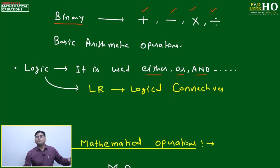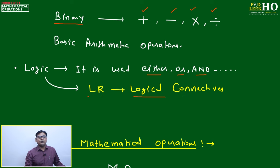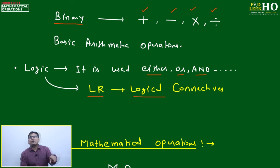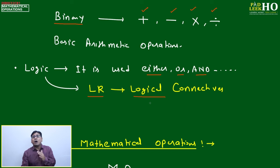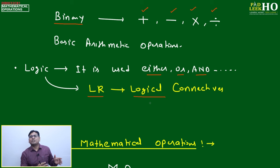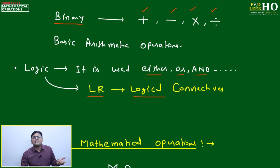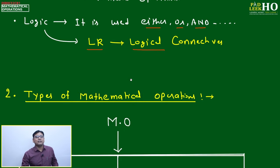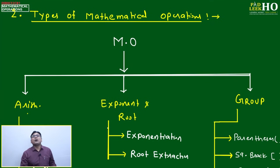Logic uses 'either/or' and 'and' — and based on that, one chapter in LR is called logical connectives. If you are good enough in basic math or fundamental mathematical operations, this part of LR will automatically improve — you will be able to correlate better. This is a unique correlation: mathematics is related to logic, and logic comes from basic math. If you understand basic math, you will apply logic better, and LR will improve.